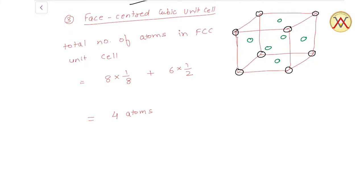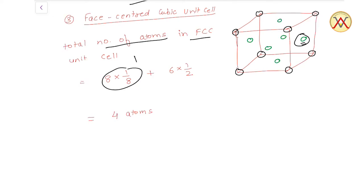Next face centered cubic unit cell. FCC में एक एक atom corner पर होने के साथ साथ एक एक atom हर face के center पर होता है — यह जो green वाले atom दिख रहे हैं. 6 faces हैं, आप इसको एक कमरे की 6 दीवारों की तरह समझ सकते हैं. Face center वाले atom का only half part ही unit cell के अंदर आता है. तो corner वालों से 1 atom, और 6 × 1/2 = 3 atoms, इस तरह FCC में total 4 atoms होते हैं.